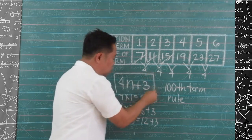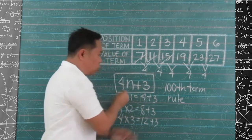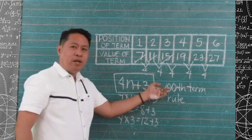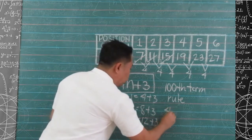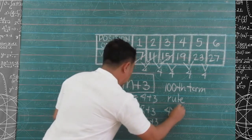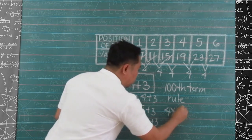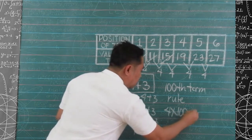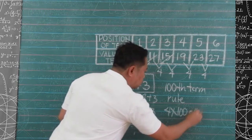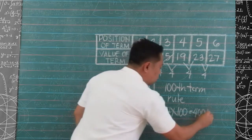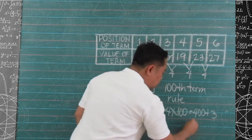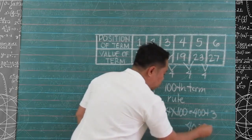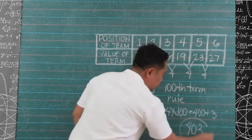We can use this rule to get the 100th term. 4 times 100 equals 400, plus 3. Our 100th term is 403.